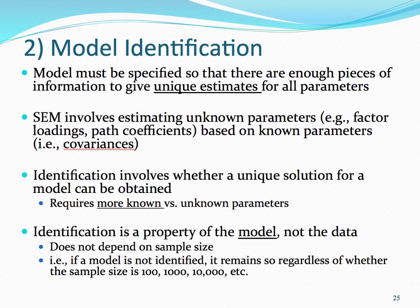An important issue in factor analysis models is that of model identification. Models must be specified so there are enough pieces of information to give unique estimates for all parameters specified in our models. Essentially, structural equation modeling involves estimating unknown parameters, for example factor loadings or path coefficients, that are specified in our model based on known parameters, specifically the covariances.